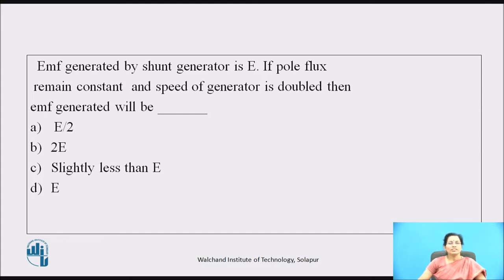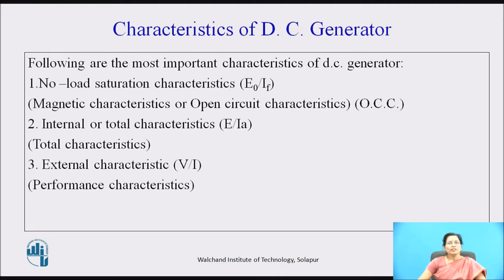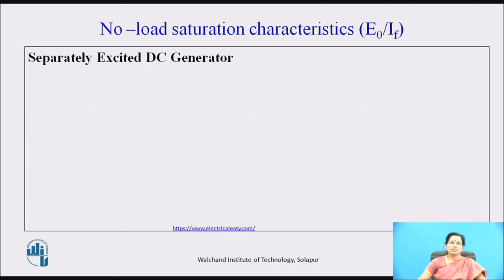The following are the most important characteristics of a DC generator: first, no-load saturation characteristics, also called open circuit characteristics or magnetic characteristics; second, the internal or total characteristics; and third, the external characteristics, also called the performance characteristics.